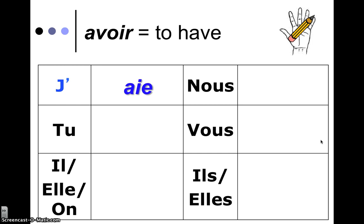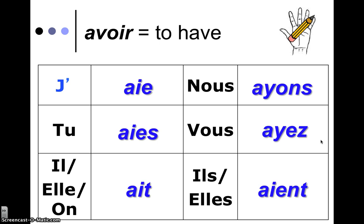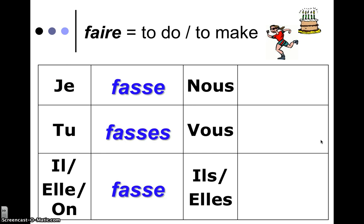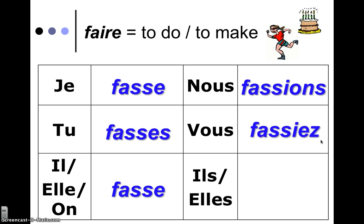Here comes 'avoir' for you: 'j'aie, tu aies, il ait, nous ayons, vous ayez, ils aient.' And our last one is 'faire': 'je fasse, tu fasses, il fasse, nous fassions, vous fassiez, ils fassent.' Beautiful, aren't they? You're going to be okay, don't worry. But that's a little petite introduction du subjonctif. Merci. Au revoir.